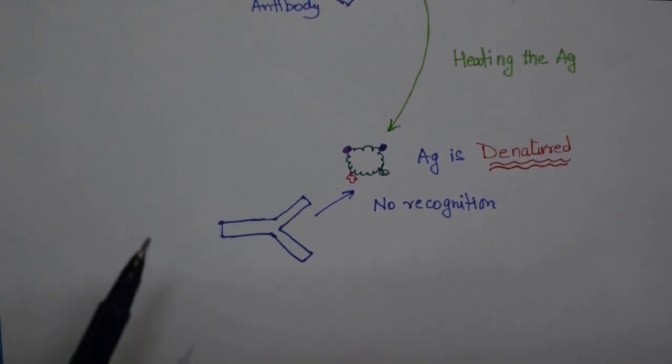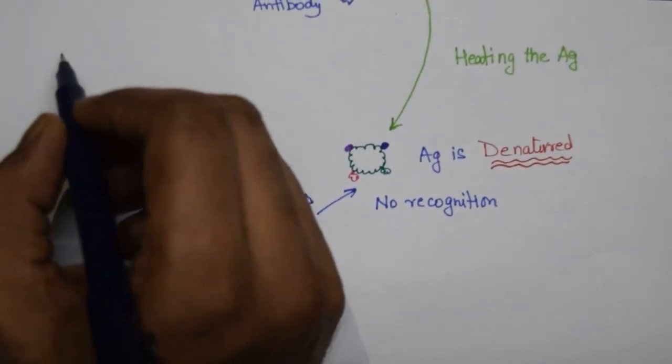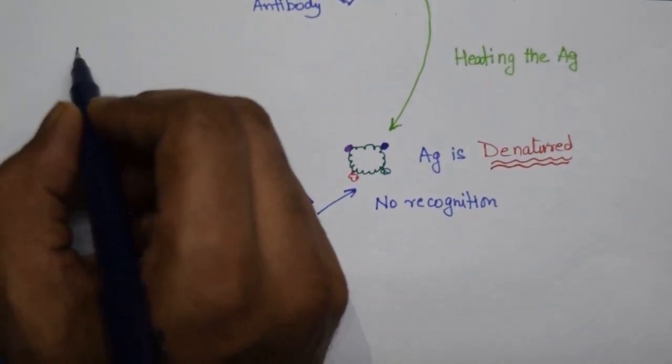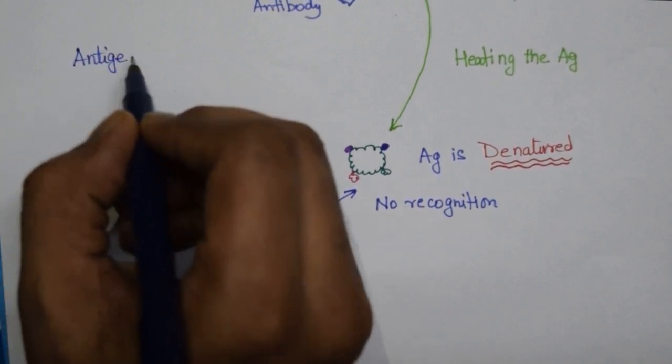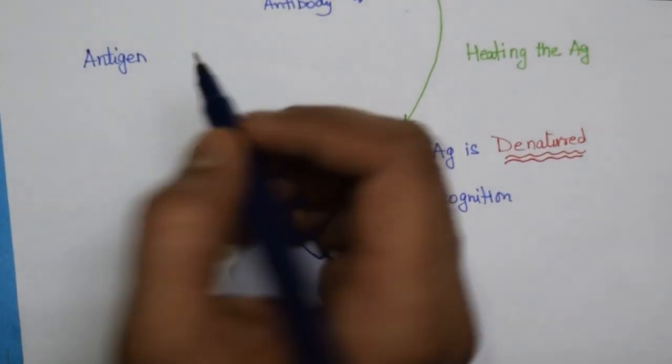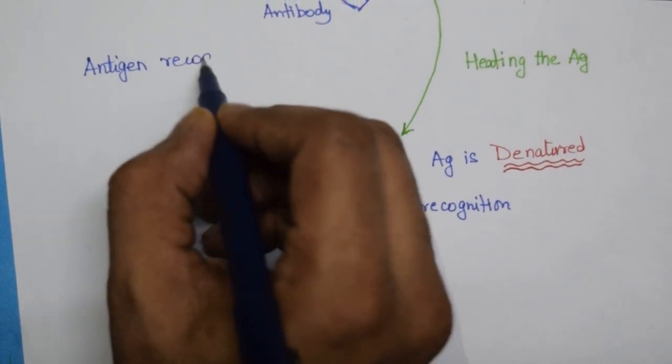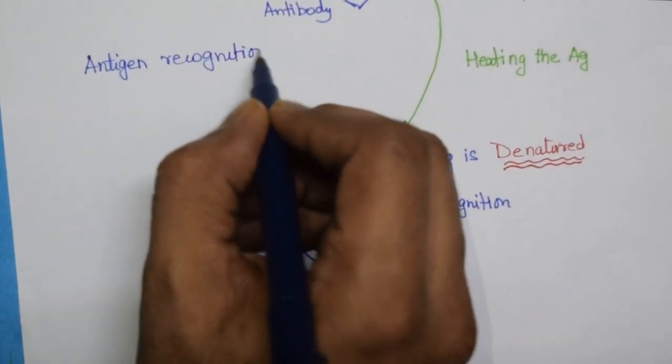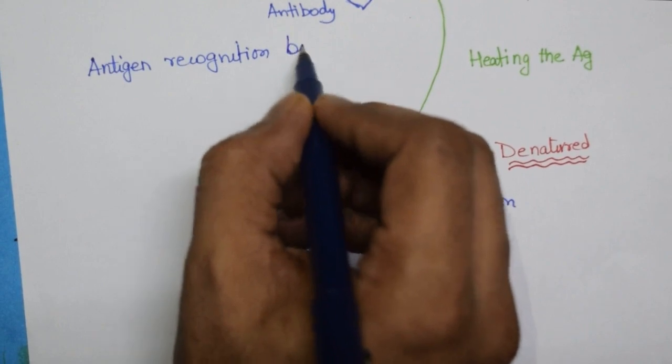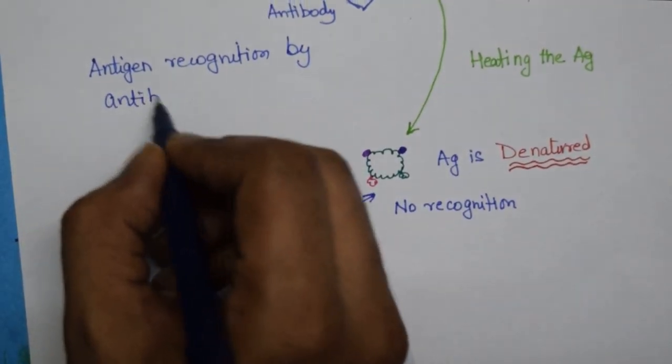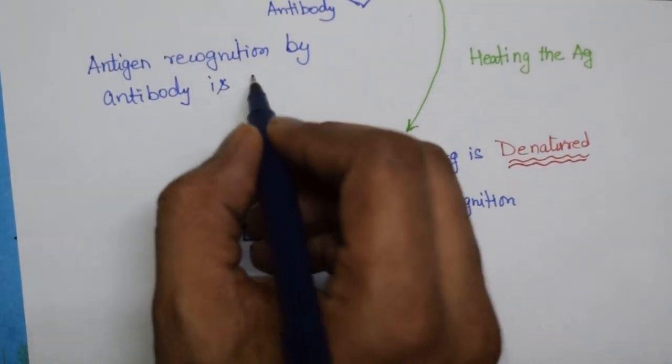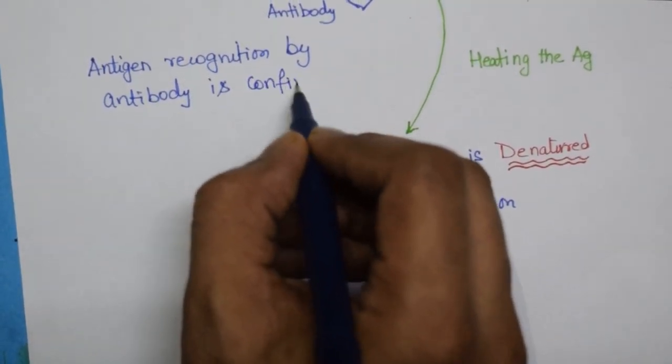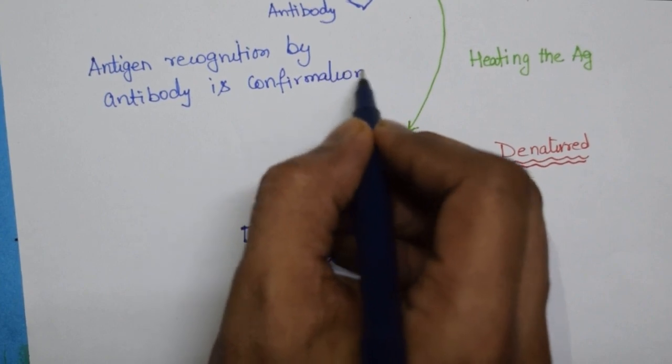So very important point which you need to understand is that the antigen recognition, especially by antibody, is conformation dependent, very important, conformation dependent.